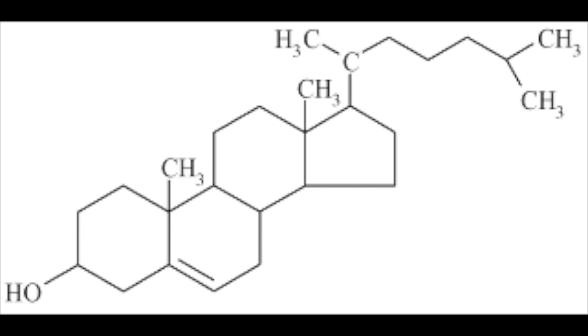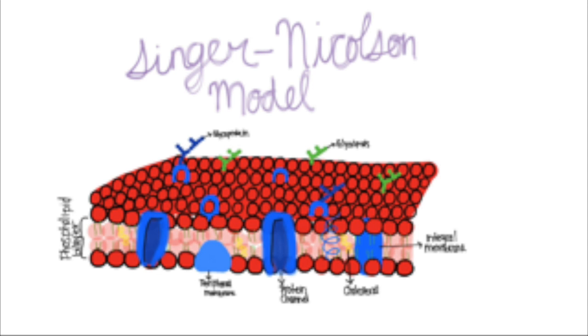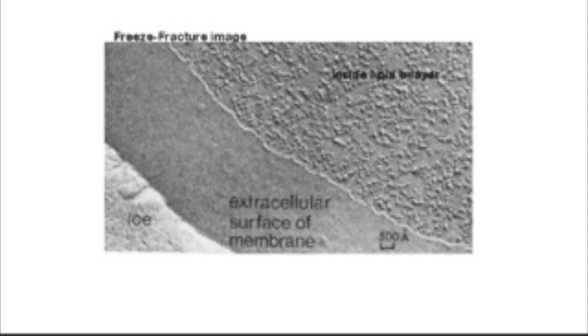It was discovered that proteins are dispersed throughout the membrane through the freeze-fracturing technique. This is when the cell is frozen and then fractured, revealing a rough surface, which indicates that the proteins are diffused throughout the membrane.